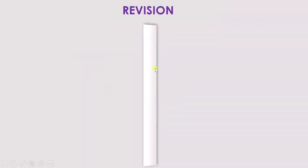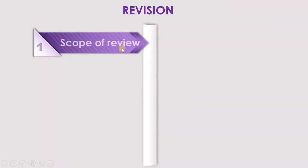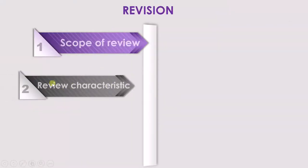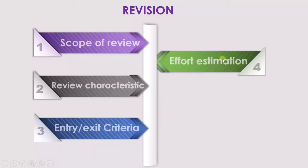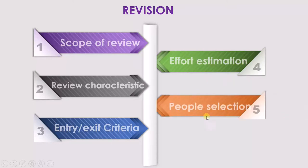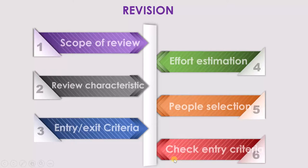Let's have a revision. The first point is the scope of the review. The second point is review characteristics. The third point is entry and exit criteria. Then effort estimation. Then people selection. And finally the last point is to check the entry criteria. So these are the six points which we have to consider during the review planning.